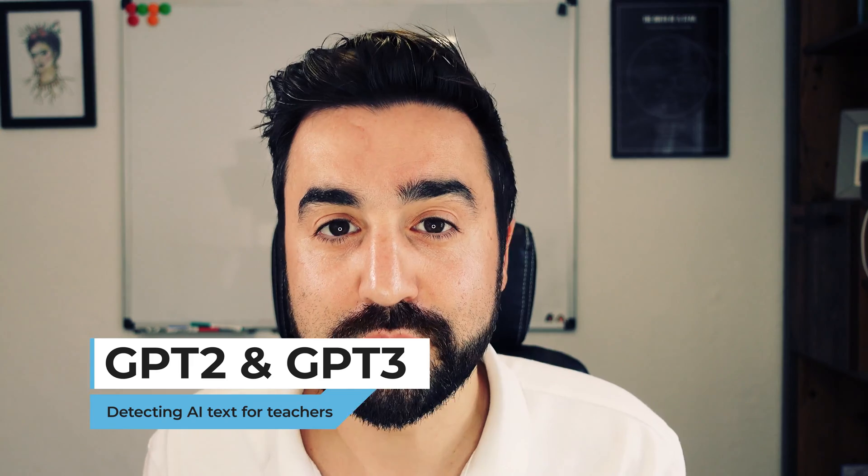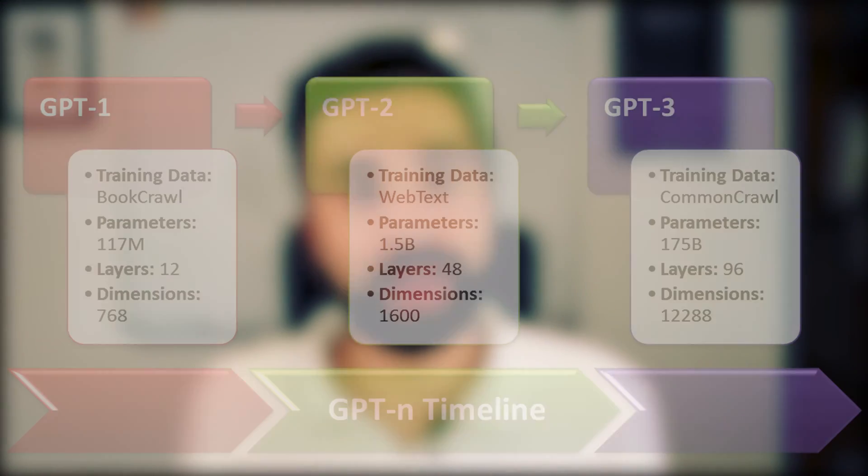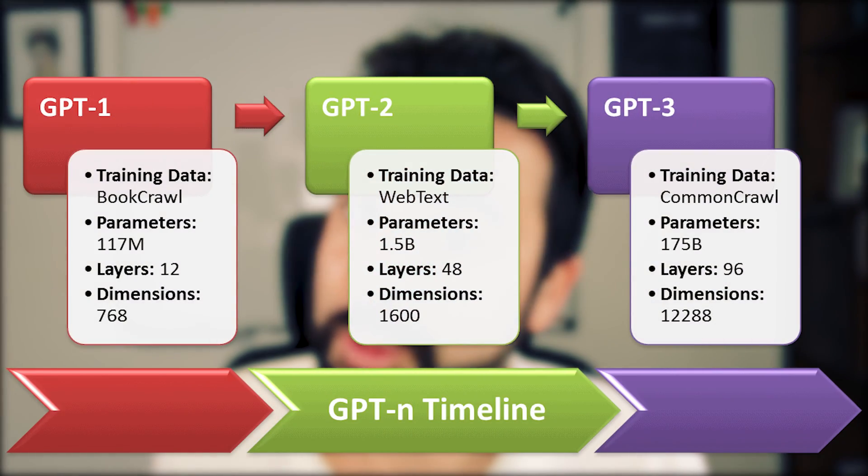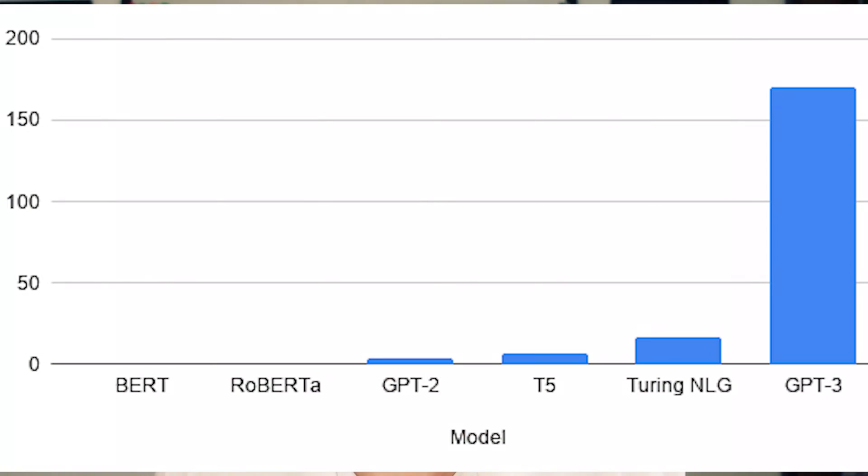Before I show you the first idea, it's important to explain that the current model being used to generate language, such as ChatGPT, is based on a model called GPT-3. Before that there was GPT-2, which is an earlier model. GPT-3 is a lot more advanced and can produce more reliable results, but there is a detector online that can identify text produced with the GPT-2 model. So all we need to do is visit the website Hugging Face.